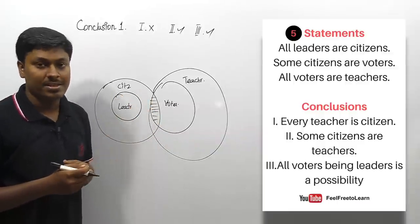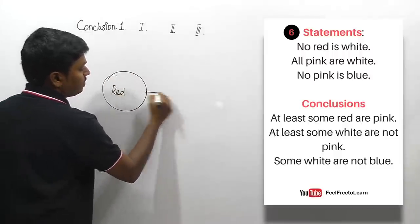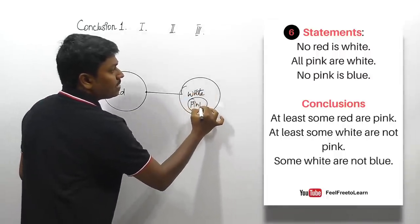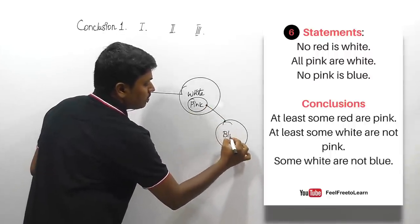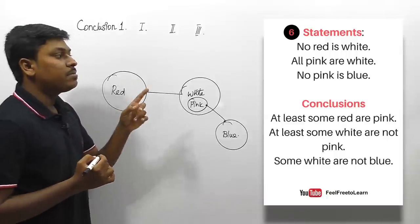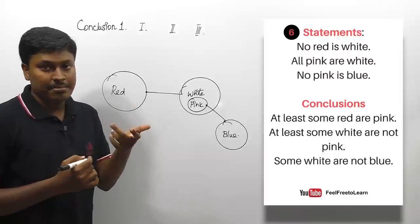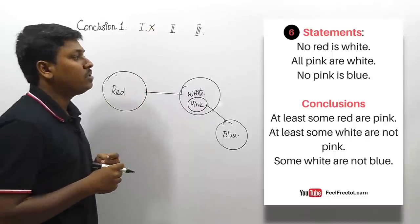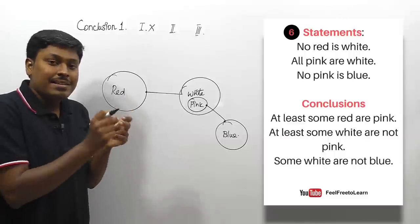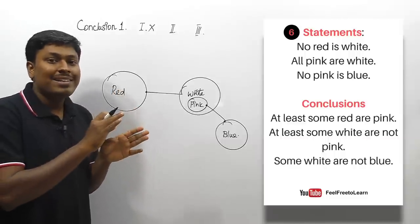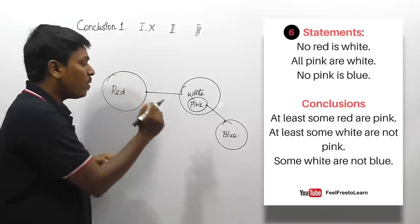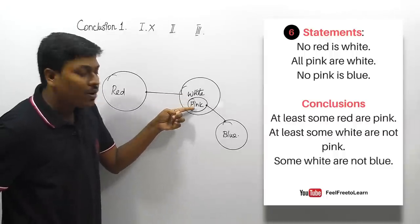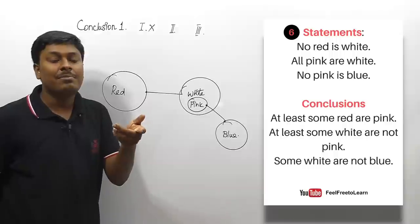Next question. Statements: 'no red is white,' 'all pink are white,' and 'no pink is blue.' Conclusion one: 'at least some red or pink' — 'at least some' means 'some,' so some red or pink. 'No' does not follow here, so conclusion one does not follow. Conclusion two: 'at least some white are not pink' — this is based on 'some not.' White and pink are inside a single Venn diagram, and if parameters are inside a single Venn diagram, 'some not' does not follow.